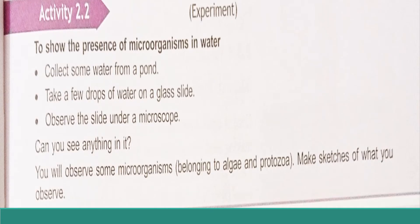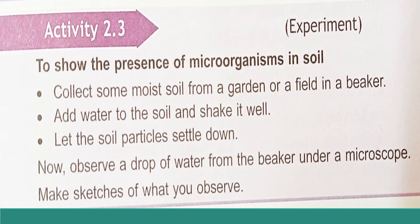To show the presence of microorganisms in water, collect some water from a water body like a pond or lake and observe it under the microscope. To show the presence of microorganisms in soil, take a small soil sample from a nearby garden, add it to water, shake it properly, allow the soil to settle down, take the upper water, and observe a drop of that water under the microscope. You will see a lot of microorganisms.